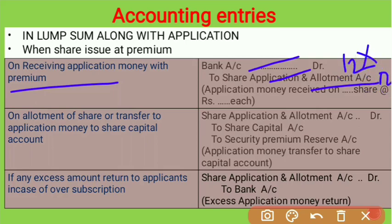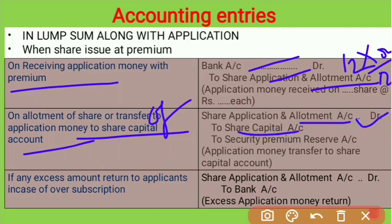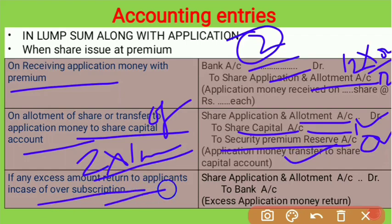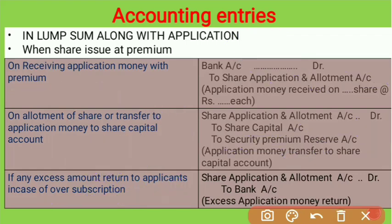On transfer of application money to share capital at premium, the entry is: Share Application and Allotment Account debit to Share Capital Account (for the face value amount), and to Securities Premium Reserve Account for the premium portion — here ₹2 per share multiplied by the number of shares. If any excess application money is returned, the entry is: Share Application and Allotment Account debit to Bank Account for the excess amount returned to applicants.